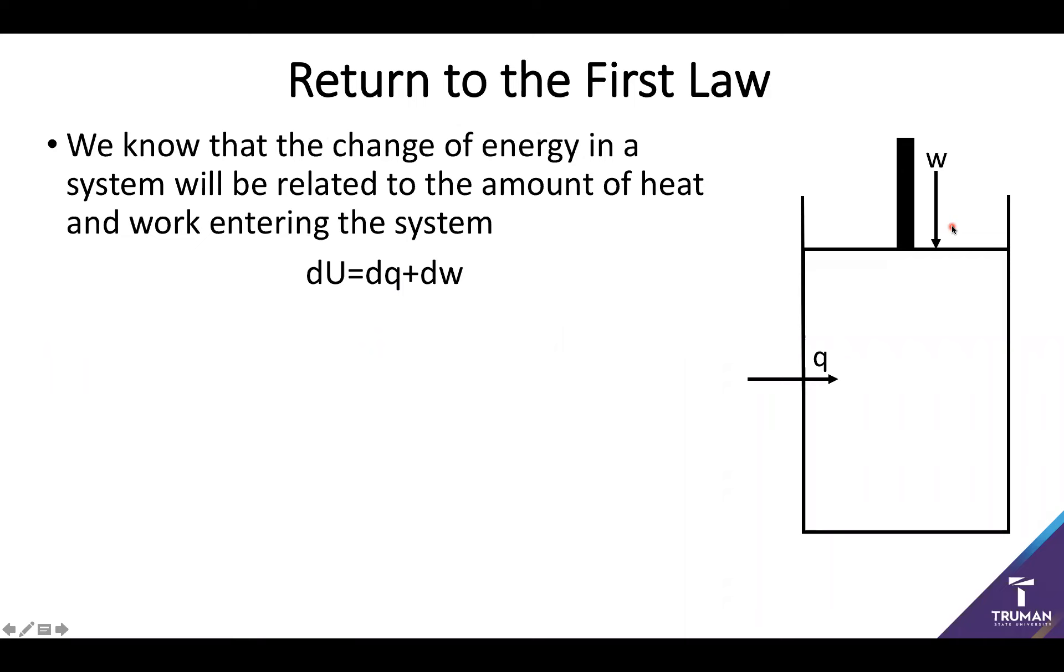When looking at the thermodynamics of a system, it's always useful to start with the first law. Our change in energy is going to be related to the heat and the work entering and leaving the system. One of the important things we discovered last time was a useful equation for the work of a system being related to the external pressure. This is essentially going to be what pressure is going to resist any work done by the system, with the change of the system occurring from the change in volume. This is often referred to as PV work.